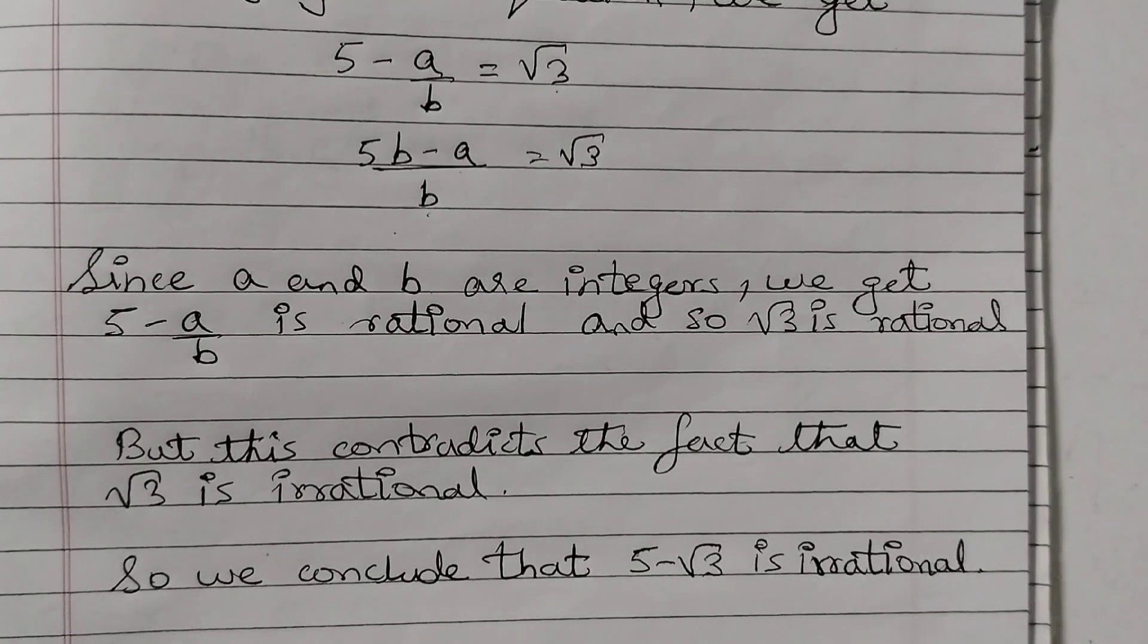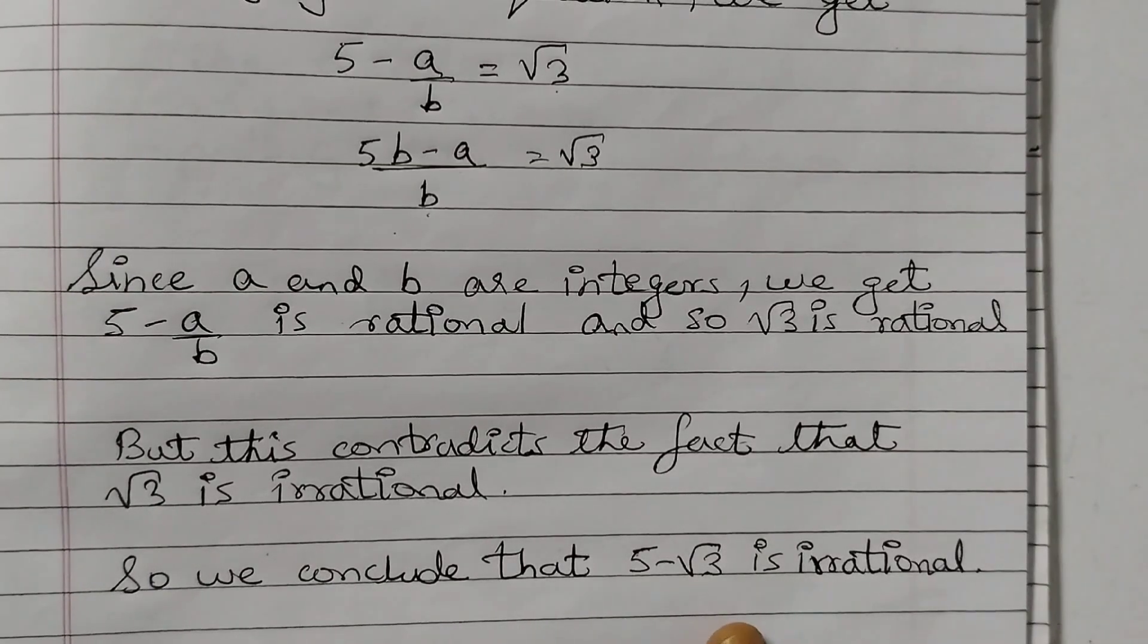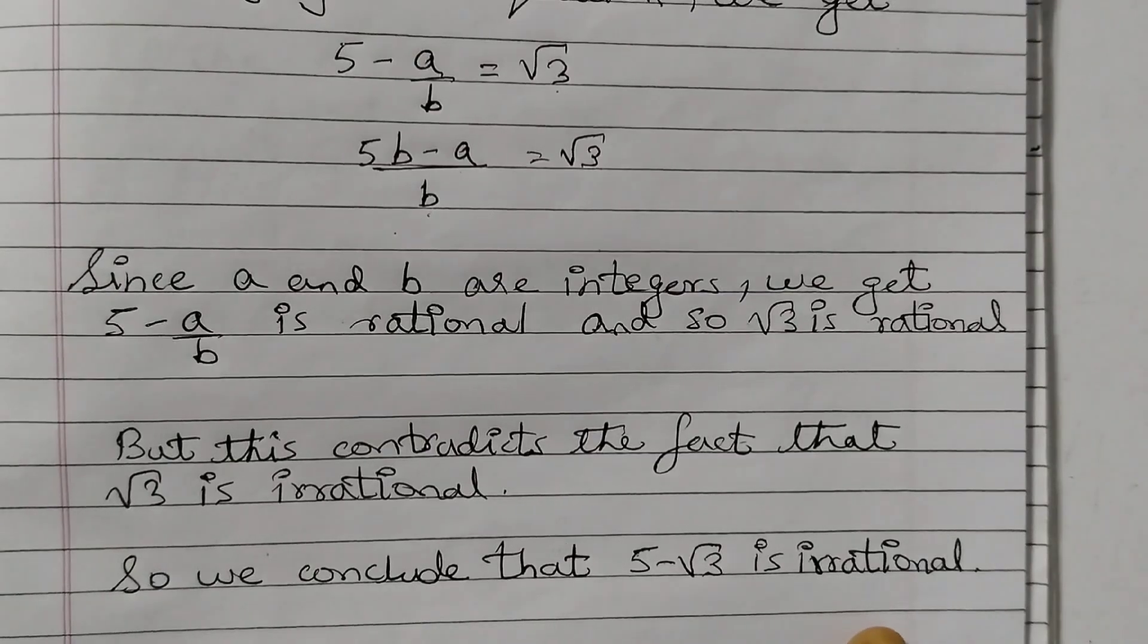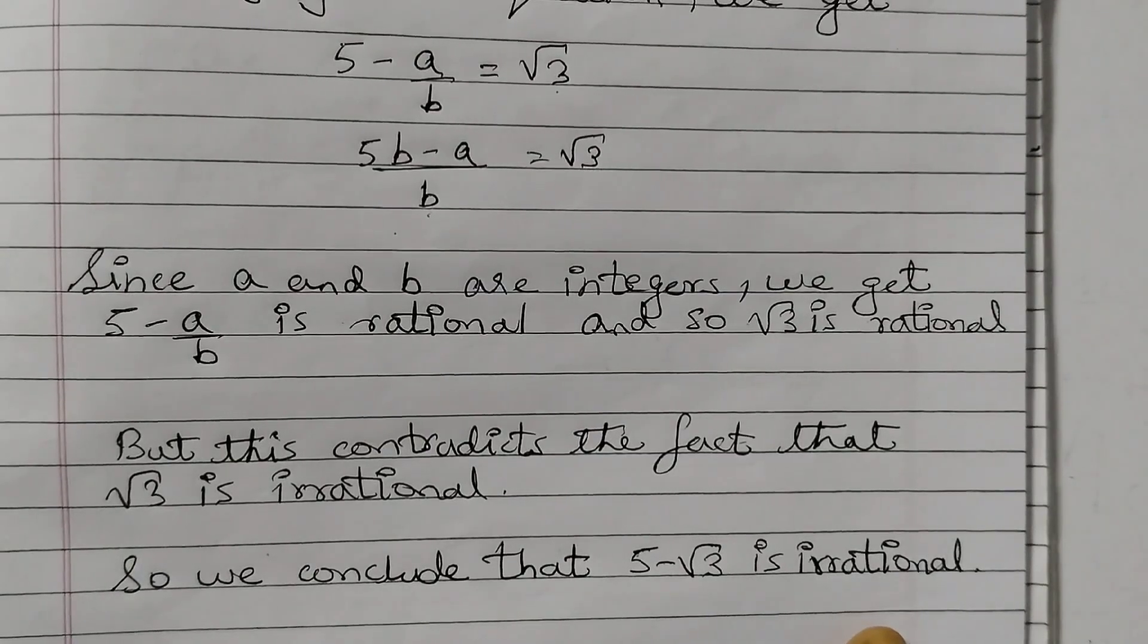So to solve this problem, you just memorize the steps like we assumed initially and then we rearranged the terms and then we are proving that it is rational. However, that is a contradiction to what we have assumed and then we conclude that 5 minus root 3 is irrational. Hope you find this video helpful. Thank you.